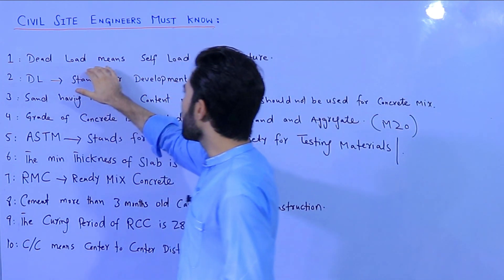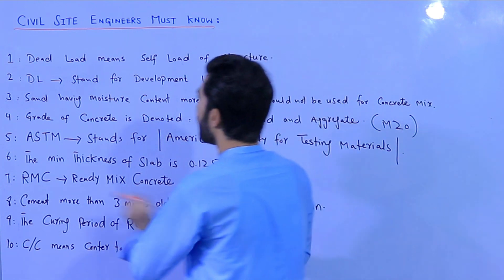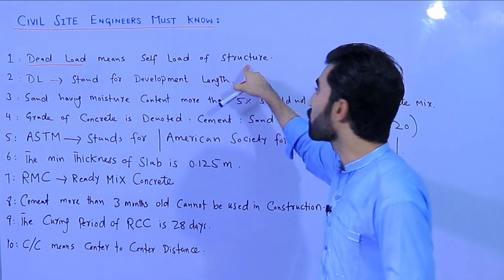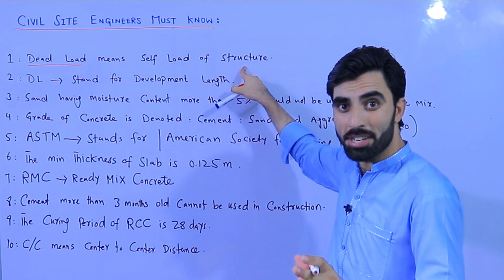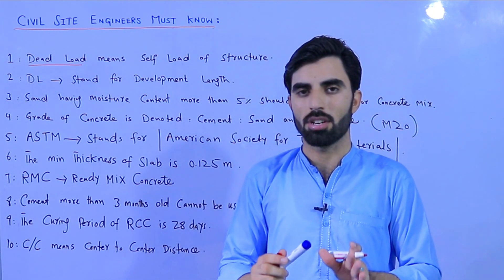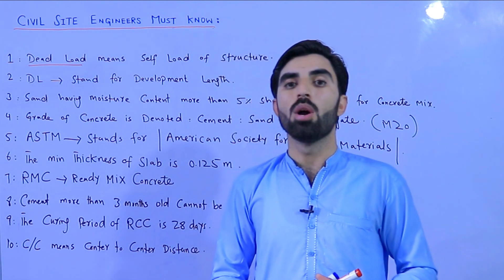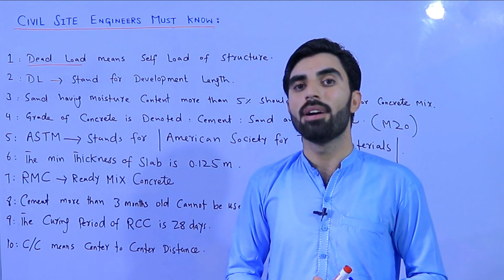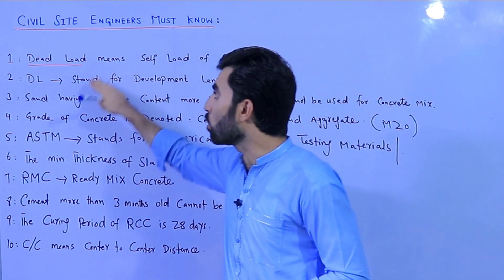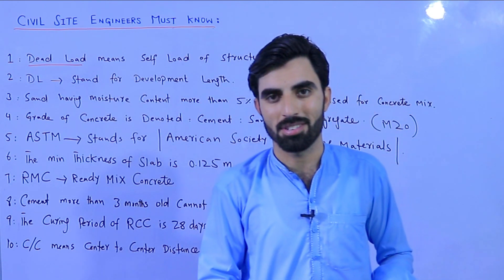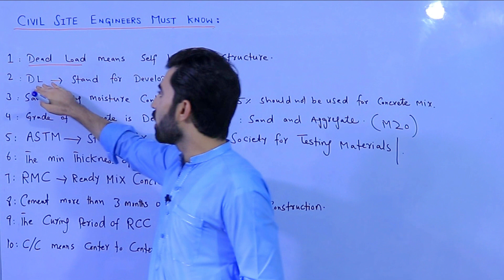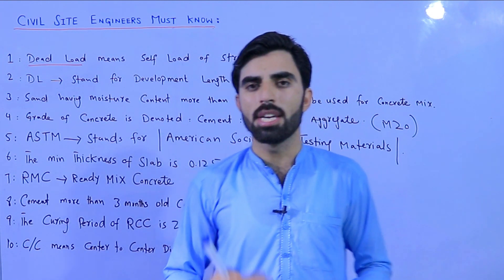The first point: many students ask me, 'What is dead load?' Dead load means the self-weight of a structure — not other loads, just the self-weight of the structure. You can get the self-weight from the volume of the structure and the density of the material used to build it. That is called dead load.